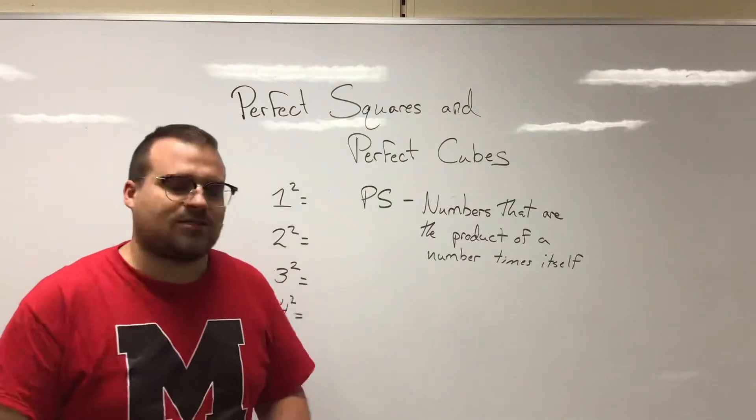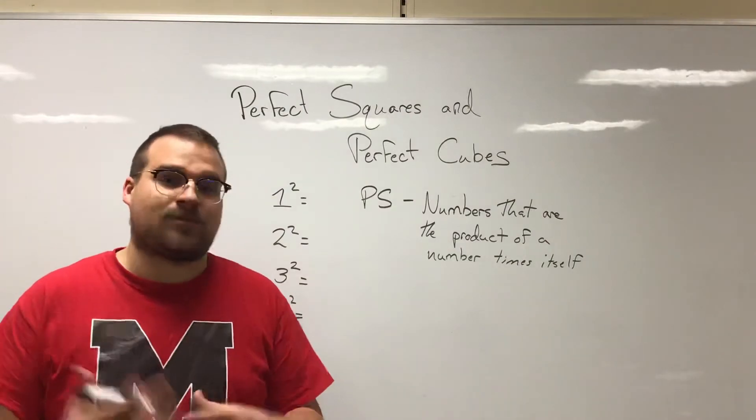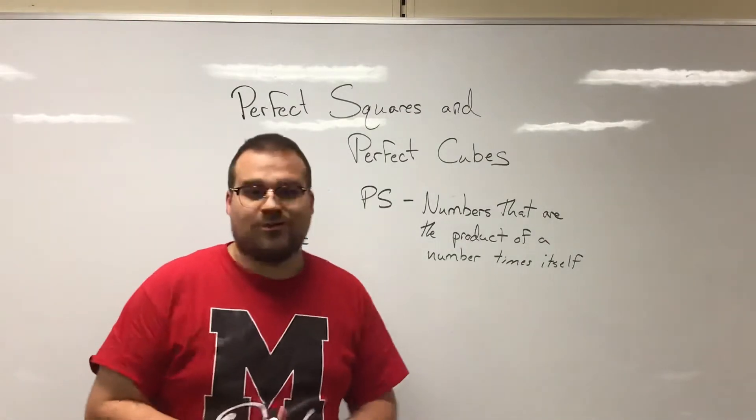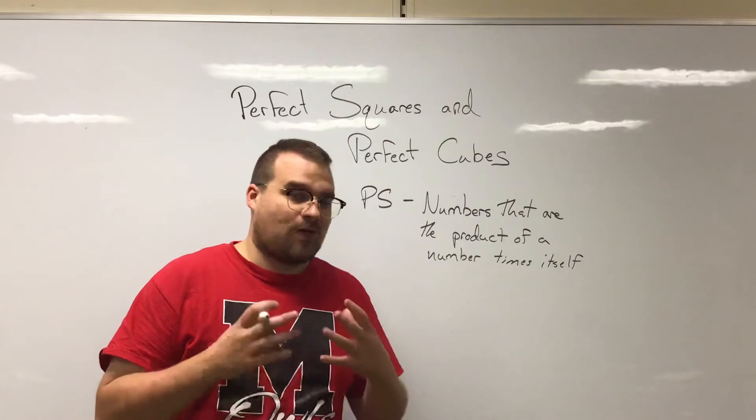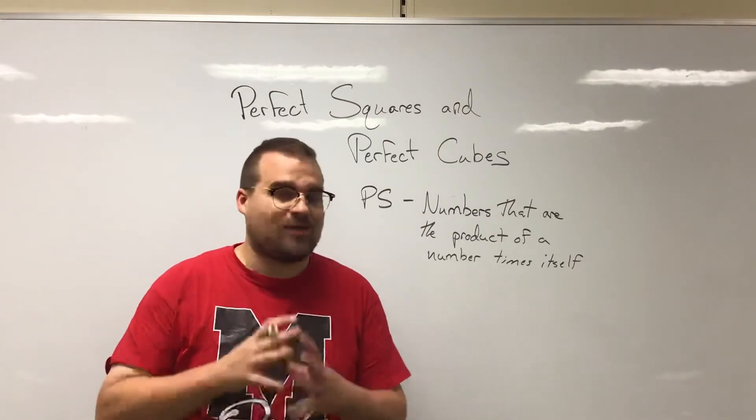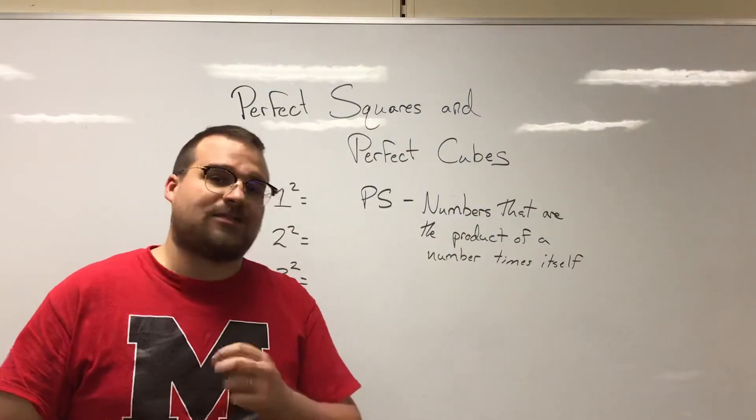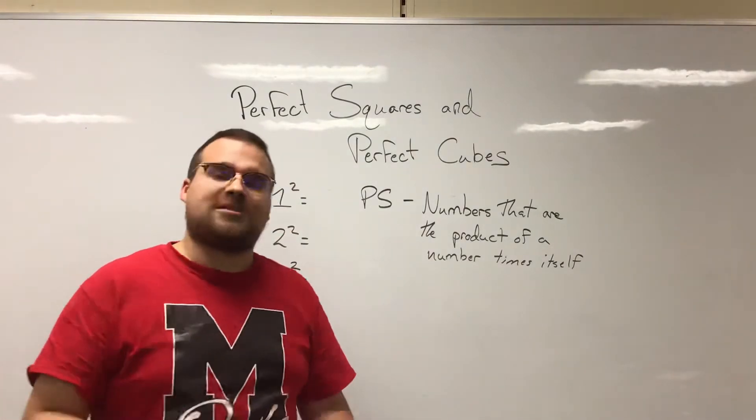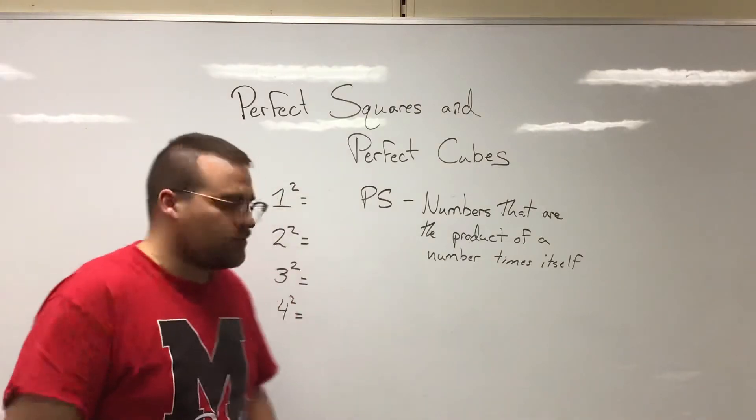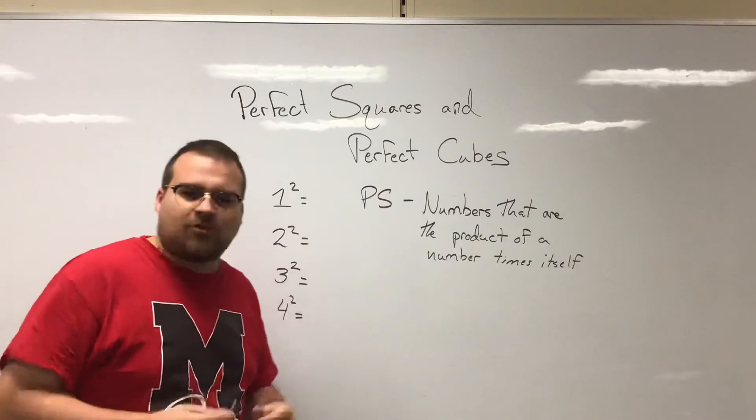The reason that we care about these is because there's a lot of times in mathematics that we need to divide a number into two equal portions. A really easy way to recognize when we can do that is by being able to notice these perfect squares when we see them in equations. So it's important that we get used to identifying these.